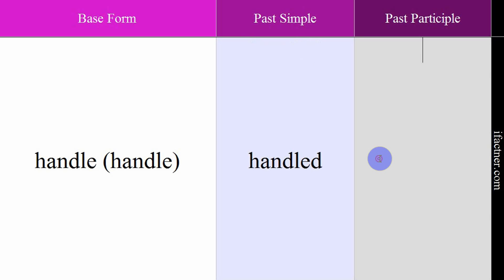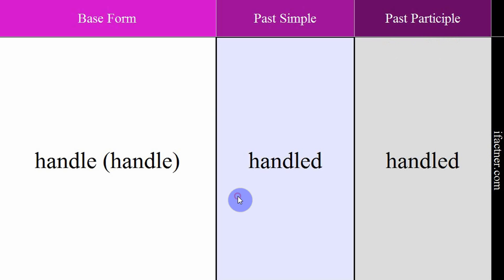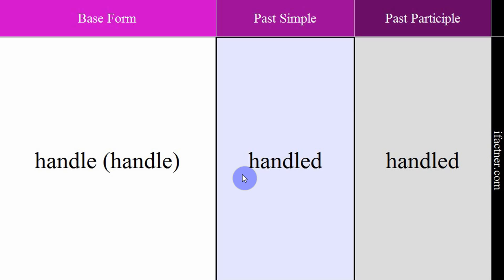The past simple form is 'handled' and the past participle form is also 'handled'. Past simple example: 'He handled the situation beautifully.' — Usne bohut khubsoorti se situation handle ki. Past participle example: 'I have already handled it.' — Mein pehle hi is per kaam ker chuka hoon. So 'handle' means kaaboo kerna, handle kerna, face kerna. Past simple: handled. Past participle: handled.